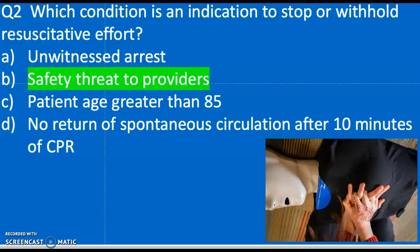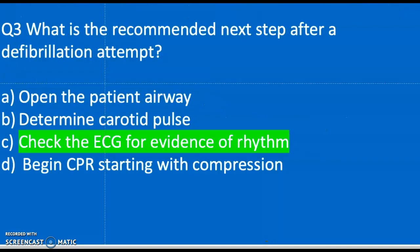Question two: Which condition is an indication to stop or withhold resuscitative effort? A) Unwitnessed arrest, B) Safety threat to providers, C) Patient age greater than 85, D) No return of spontaneous circulation after 10 minutes of CPR. You must always establish that the scene is safe. If the scene is not safe, you're putting yourself at risk for harm. The correct answer is B — safety threat to providers.